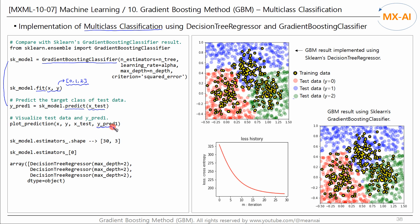Now, let's check the prediction results. The results are like this. The picture above is the result of decision tree regressor, and the picture below is the result of gradient boosting classifier. Yellow is the training data, and red, blue, and green are the test data.